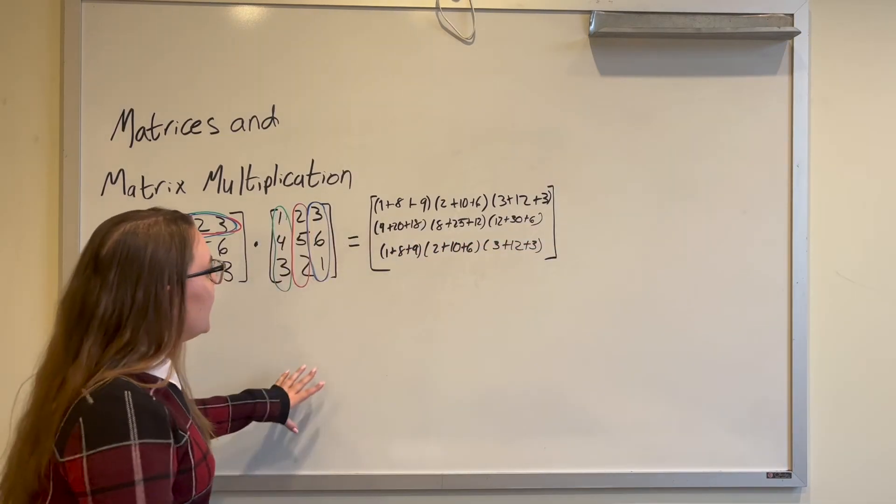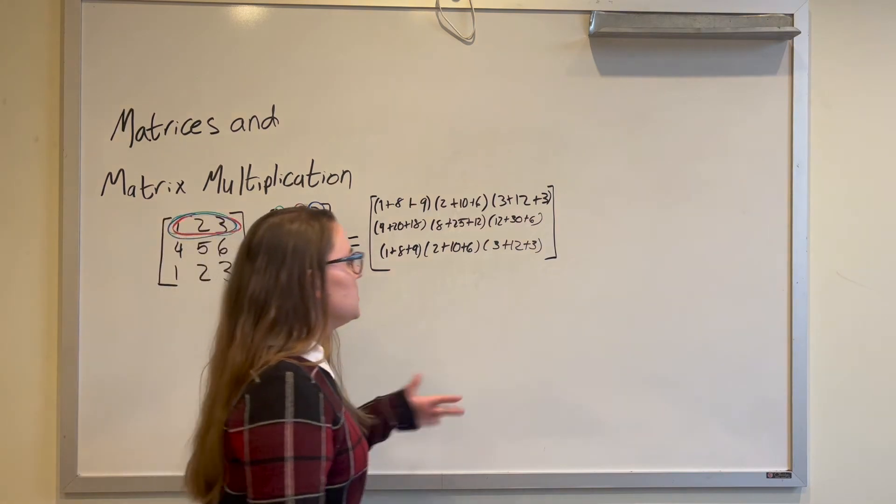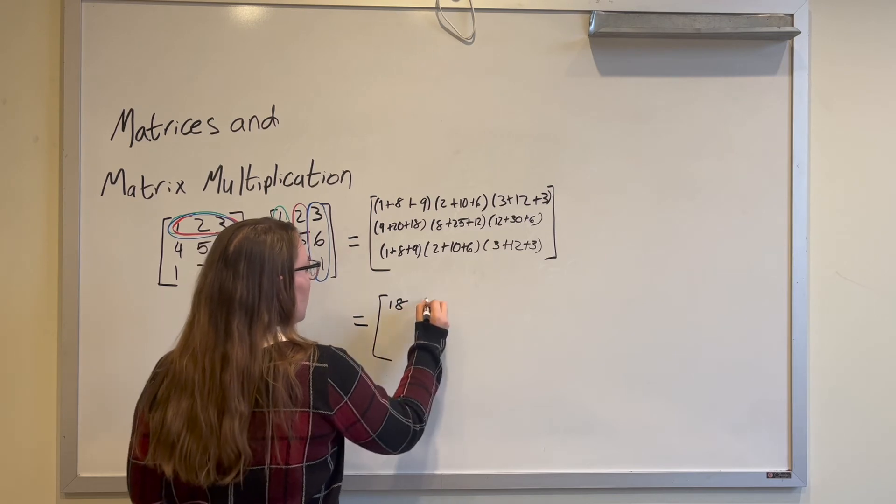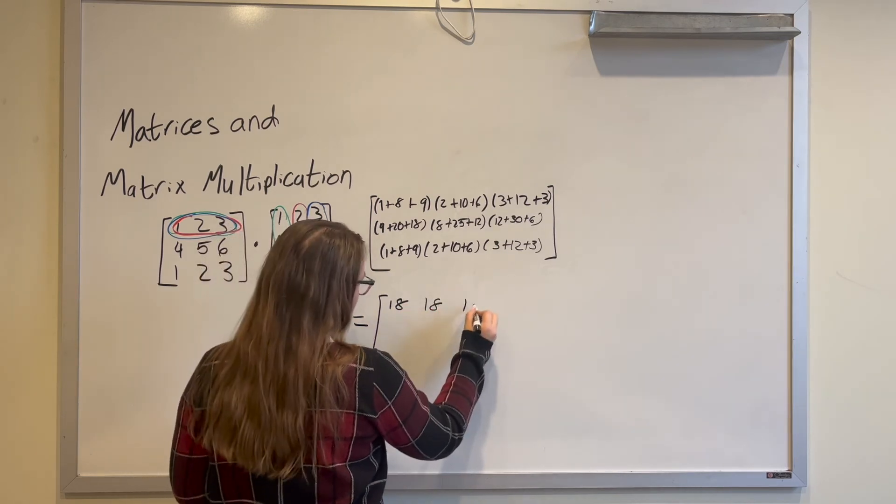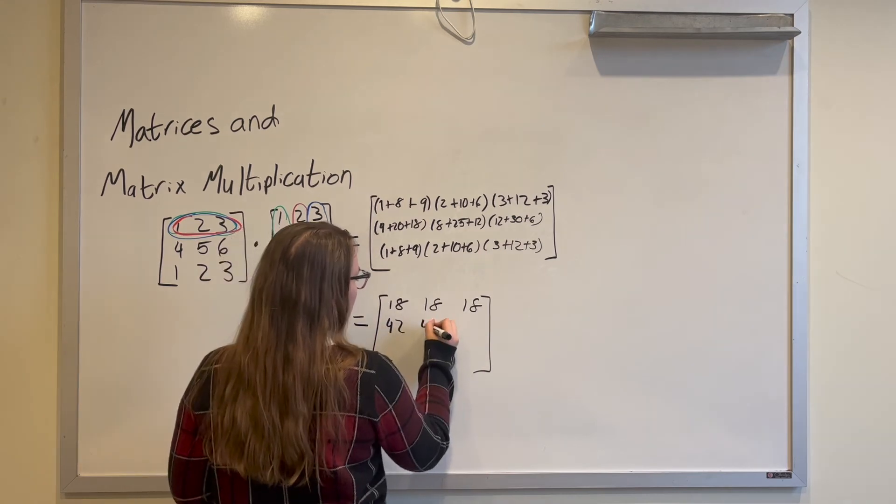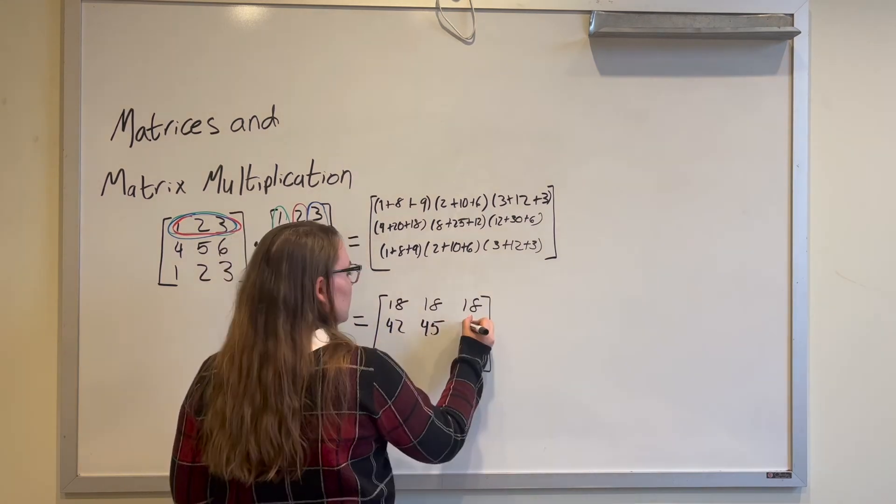Alright, and then we can go ahead and add all of our numbers together to get our final matrix. 18, 18, 18, 18. I did do that on purpose. 42, 45, 48.